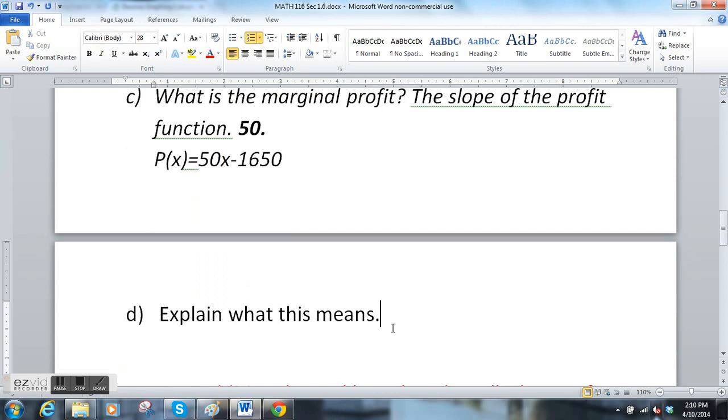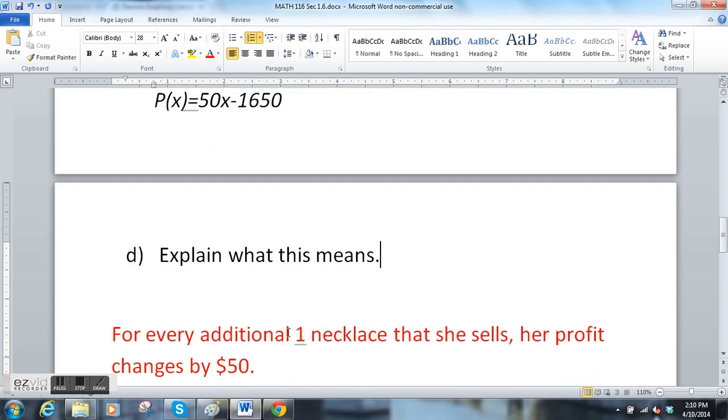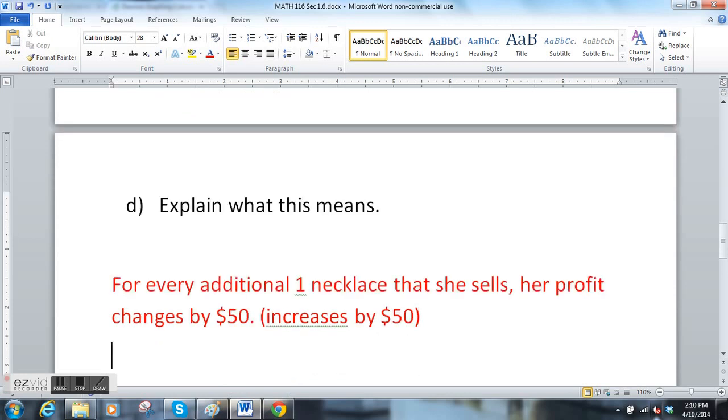Explain what this means. Some questions ask you to explain what the marginal profit means. In this case it's saying for every additional one necklace that she sells, her profit changes by fifty dollars. In this case it increases by fifty dollars. So the profit is going up by fifty dollars.